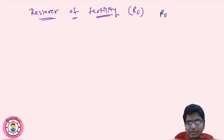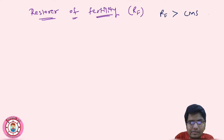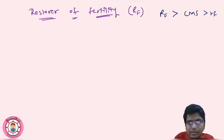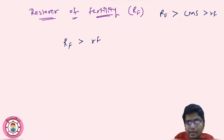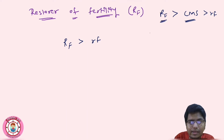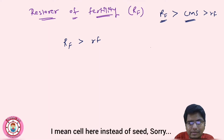Rf is dominant — capital Rf is dominant over CMS and over small rf. CMS is less dominant than the Rf factor. So capital Rf is dominant to small rf.